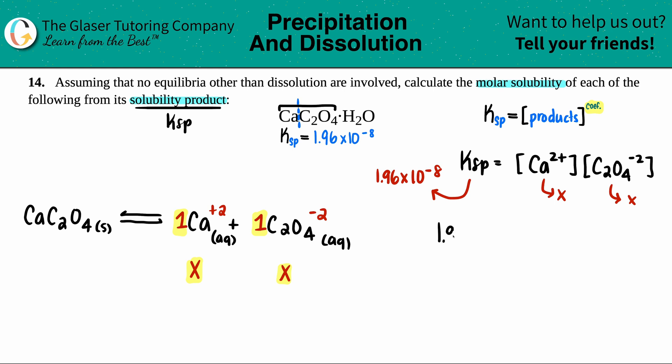So I got 1.96 times 10 to the negative eighth equals the two values. I have X times X, but X times X is just X squared.